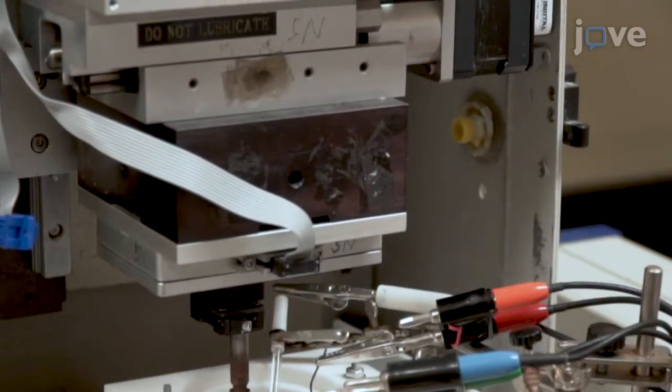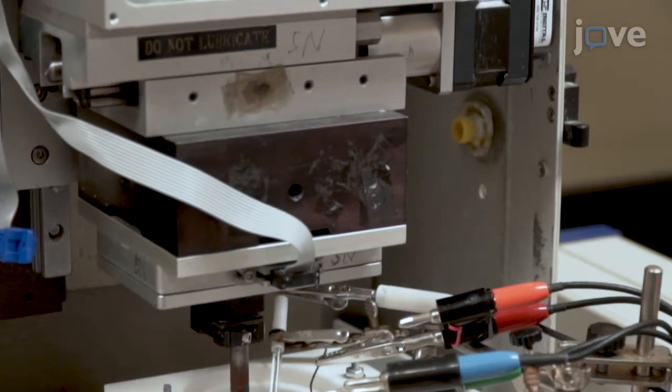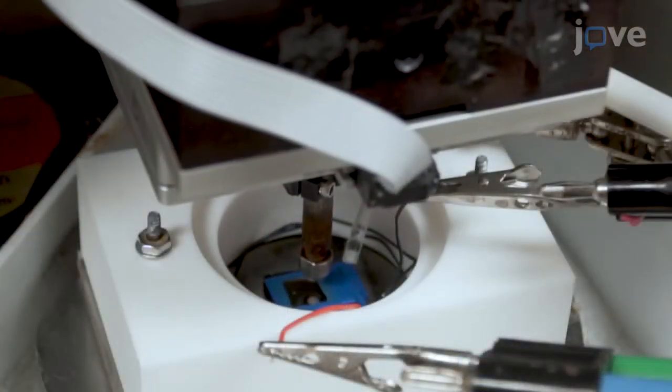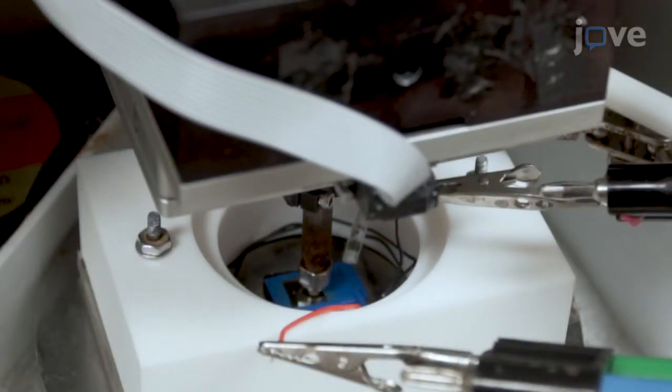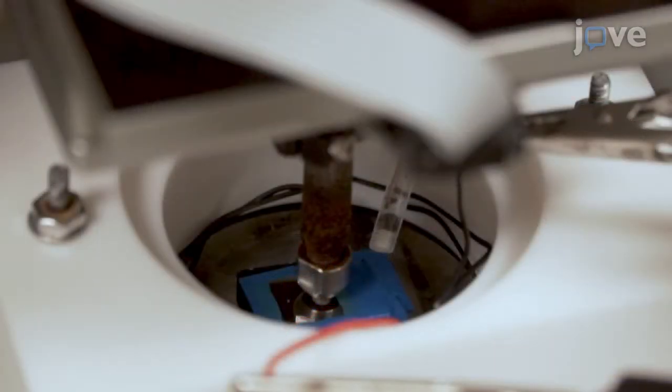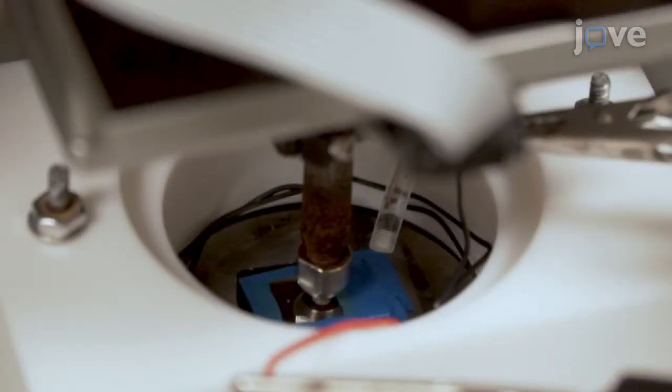To measure the wear rate from cathodic protection, move the indenter probe to one millimeter away from the surface of the sample. After confirming the location of the indenter near the center of the sample and no electrical contact between the electrodes, the probe, and the sample surface...